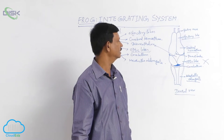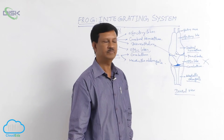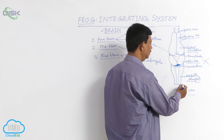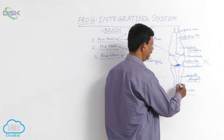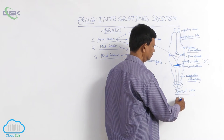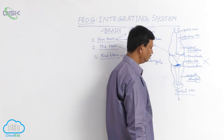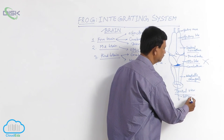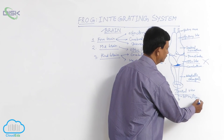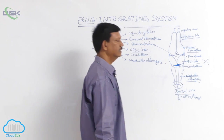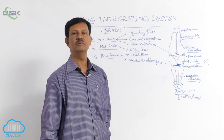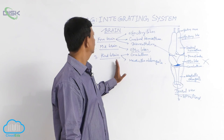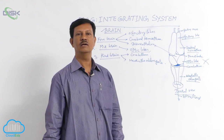That is why the medulla oblongata is the most important organ of the brain. It gradually passes through the foramen magnum, becomes cylindrical and elongated, and finally becomes the spinal cord, which is found in the spinal canal of the vertebral column. These are the important points of the frog brain.